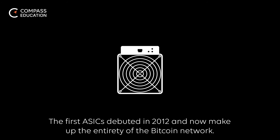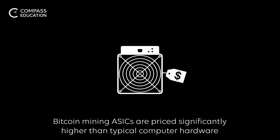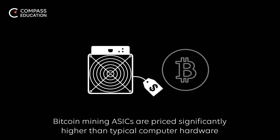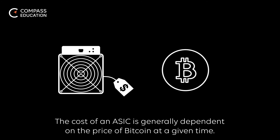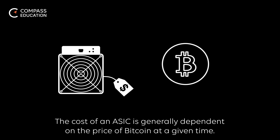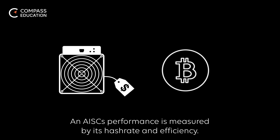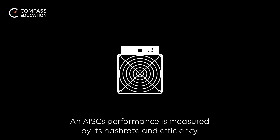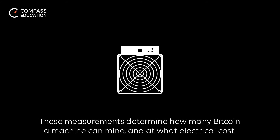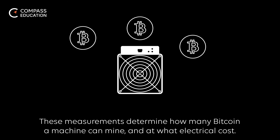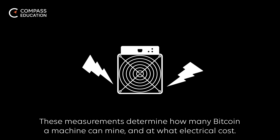The first ASICs debuted in 2012 and now make up the entirety of the Bitcoin network. Bitcoin mining ASICs are priced significantly higher than typical computer hardware. The cost of an ASIC is generally dependent on the price of Bitcoin at a given time. An ASIC's performance is measured by its hash rate and efficiency. These measurements determine how many Bitcoin a machine can mine and at what electrical cost.